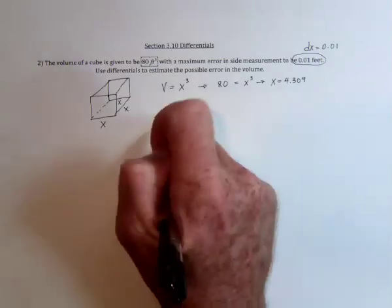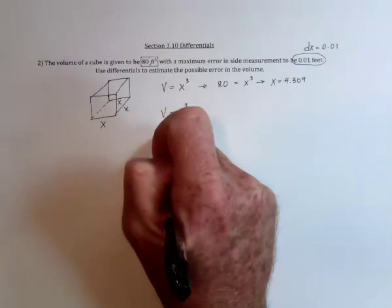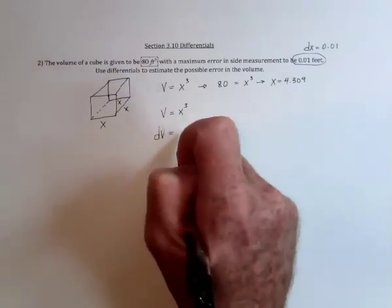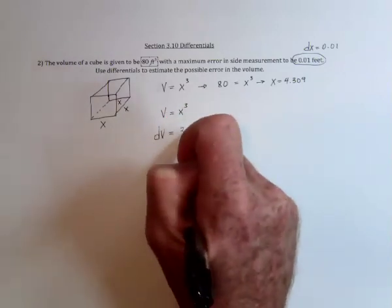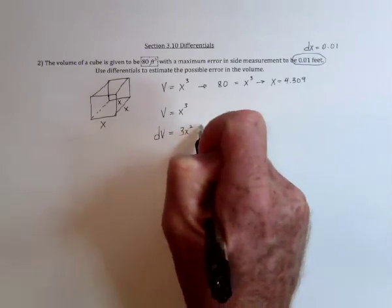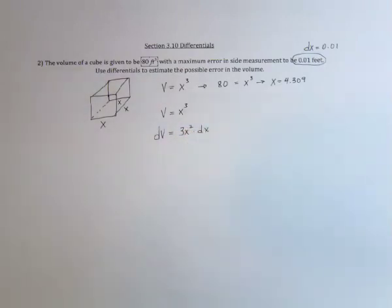And then take the derivative and we'd have dV, how much the volume changes depends on 3x squared and then dx. So there's our equation with differentials.